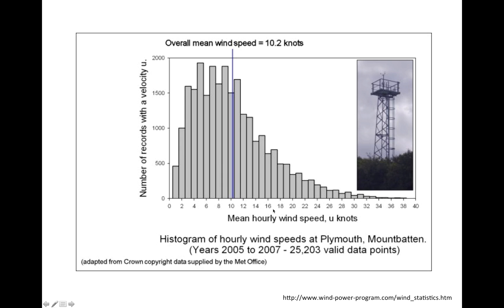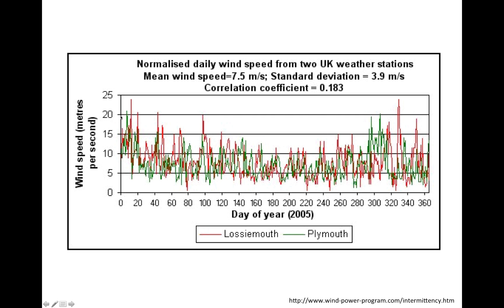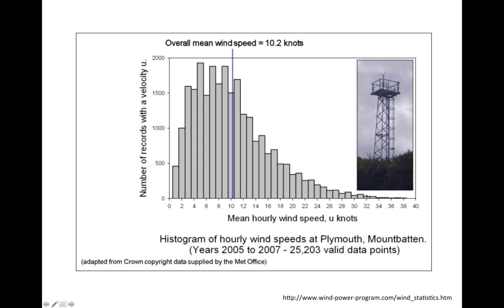In the wind speed histogram, the horizontal axis is the wind speed — essentially the center location of each bin. The vertical axis, the height of the bars, tells you how many data points are inside each velocity bin. Remember that each data point is associated with a certain time interval — it is an average wind speed over a small time interval. By counting the number of data points inside each bin, we can obtain the total amount of time during which the wind was blowing at the speed associated with that bin.